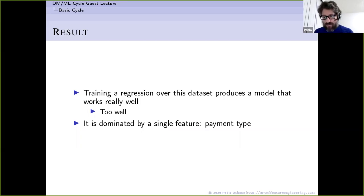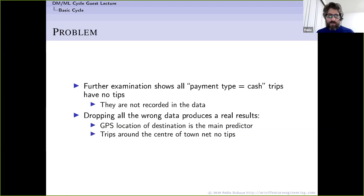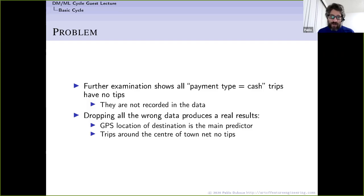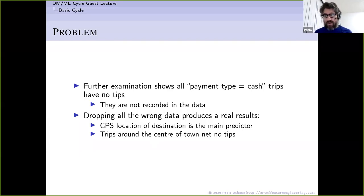A big percentage of the data recorded zero tips whenever someone paid with cash. It appears that the people filling in the data chose not to report cash tips to avoid paying taxes on them. Dropping all this erroneous data produced much better results. They then found that GPS destination location was the main predictor — trips around the city center had no tips — and they achieved a better, more meaningful model.